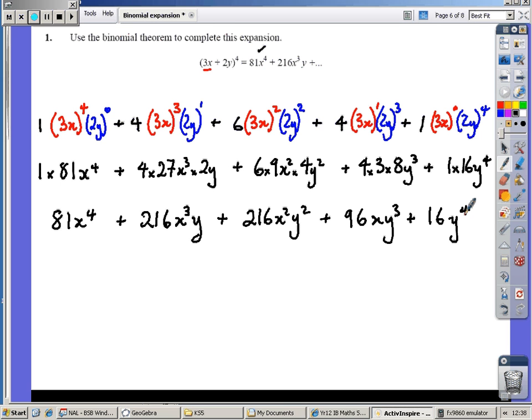Three elements to each part of the expansion: a coefficient from your calculator or Pascal's triangle, powers of a (in this case 3x) which decrease, and powers of b (2y in this case) which increase.